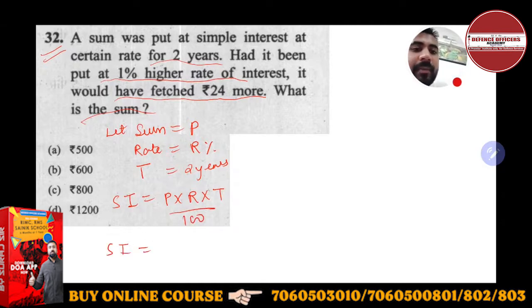So from here, SI will be how much? Principal is P, rate is again R, time is 2 / 100. So this will come PR / 50.